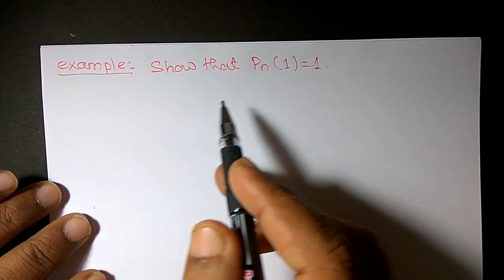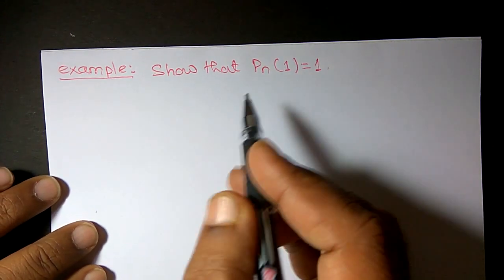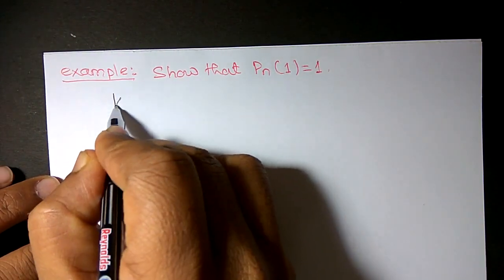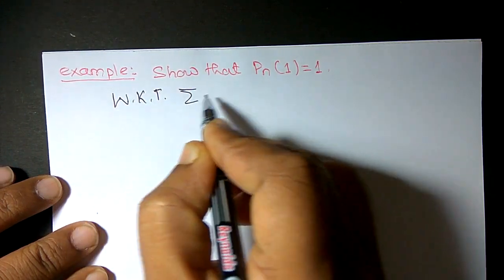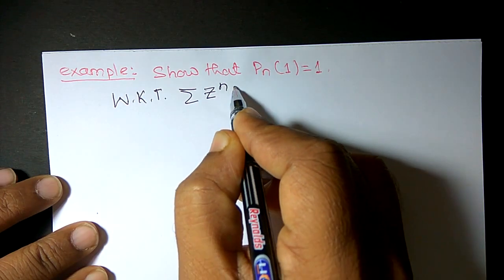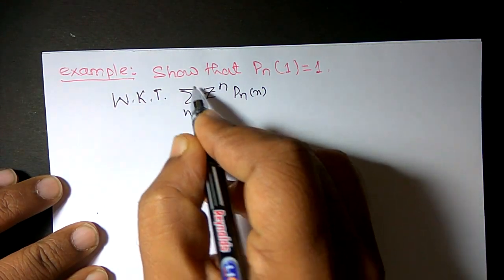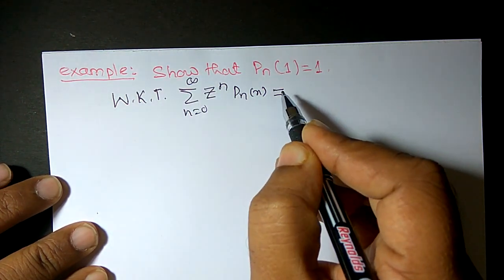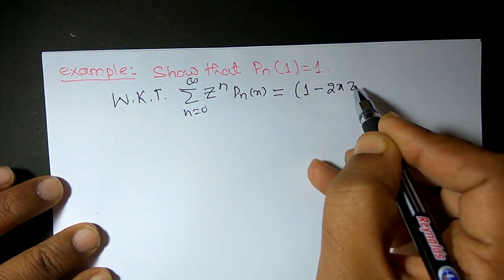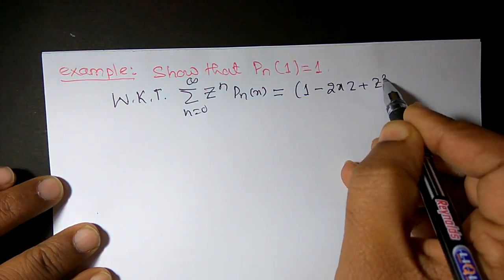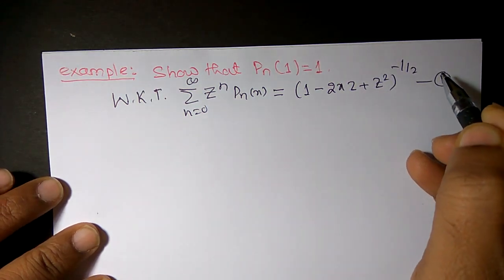We are given to show that P_n(1) = 1. We will use a generating function. We know that summation of z^n * P_n(x), where n varies from 0 to infinity, is equal to (1 - 2xz + z²)^(-1/2). We will call this equation number 1.